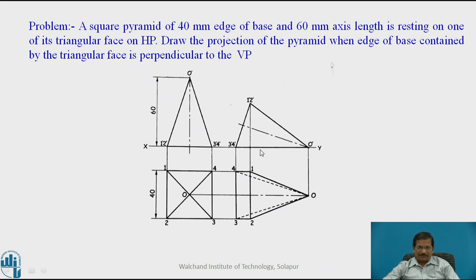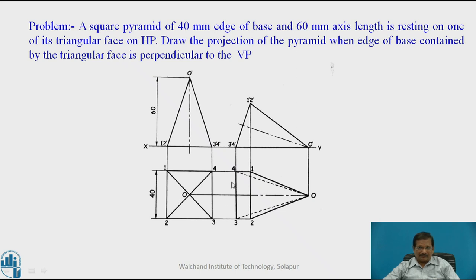When observing from the top, points 1, 2, 3, and 4 will all be visible, so they are drawn as dark lines. However, point 3-4 is away from the observer. So lines O3 and O4 will be dotted lines, while the other lines will be dark. Complete the view accordingly, taking care of visibility.